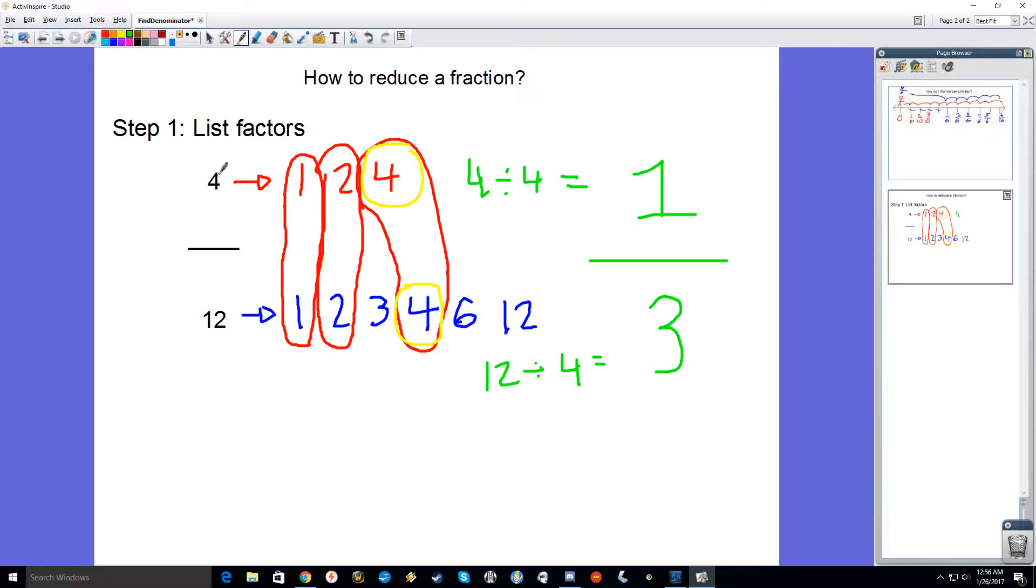So 4 divided by 4 is 1, 12 divided by 4 is 3. So 4 twelfths equals 1 third.